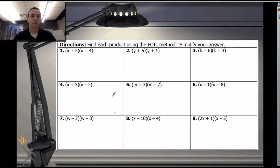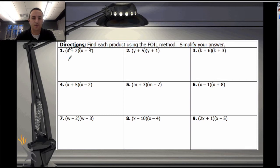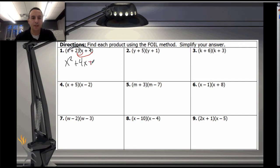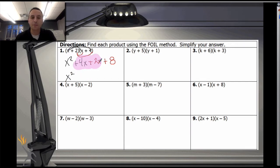Let me change to a color that's easier to see. I'm going to do problems 1, 4, and 7, then ask you to pick 3 over here to do. So following the distributive property: x times x and x times 4 gives x squared plus 4x. Now distributing the 2 to both x and 4 gives positive 2x and positive 8. Combining like terms gives a final answer of x squared plus 6x plus 8.